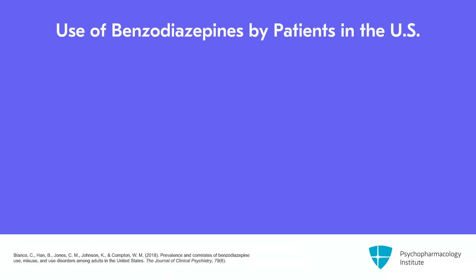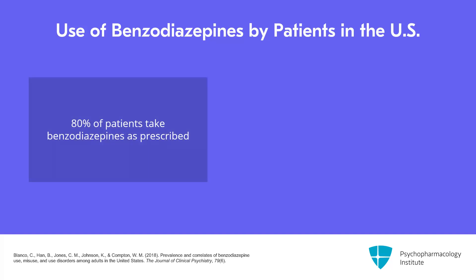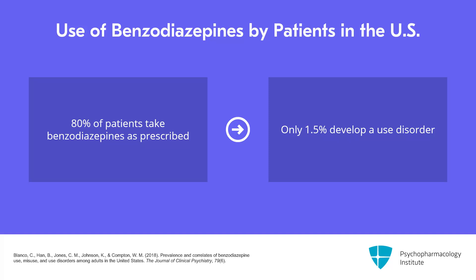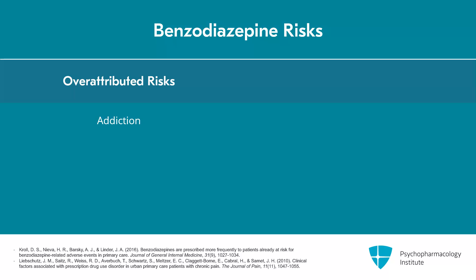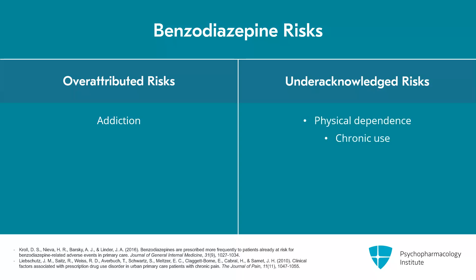When we look at the prevalence of benzodiazepine use in the U.S., it is really important to convey that the vast majority of patients take these medications as prescribed — over 80%. Only 1.5% of benzodiazepine users have a possible use disorder or addiction. So it is actually a very small percentage of patients prescribed these medicines who develop a use disorder. We have over-attributed the risk of addiction to these medications and under-acknowledged the prevalence of physical dependence, chronic use, and the subsequent risk of protracted withdrawal in many patients.